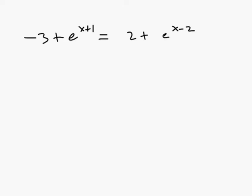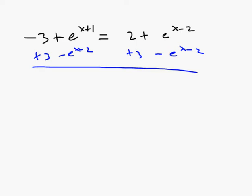I'm tempted to get all the things with x on one side and all the things without x on the other. So I'm going to add 3 to both sides, and then subtract e to the x minus 2 from both sides. If I do that, on the left I have e to the x plus 1 minus e to the x minus 2 equals 5.